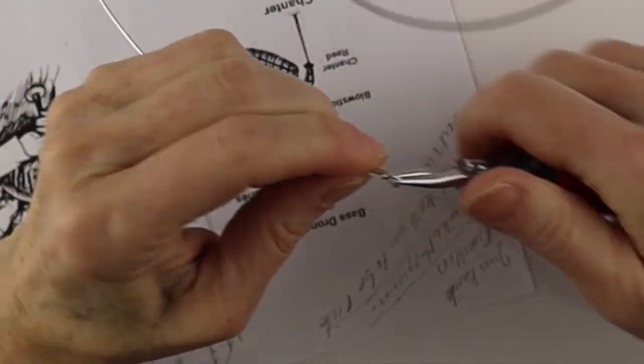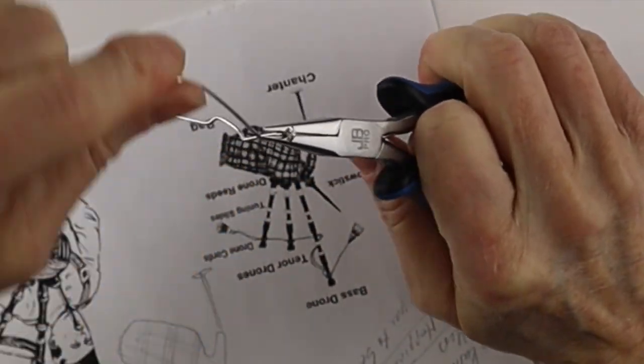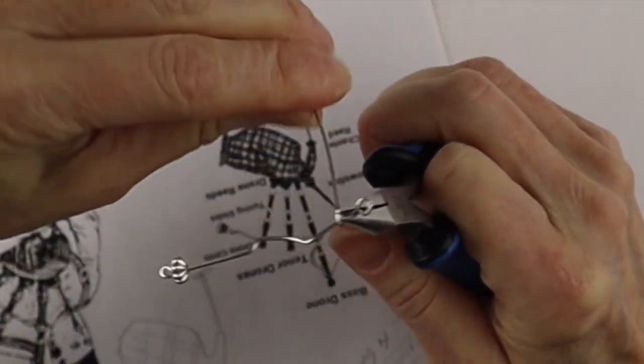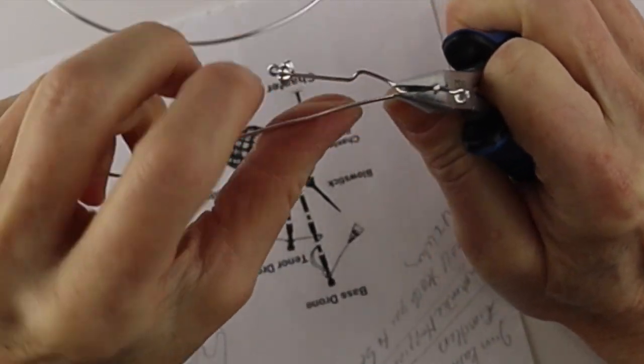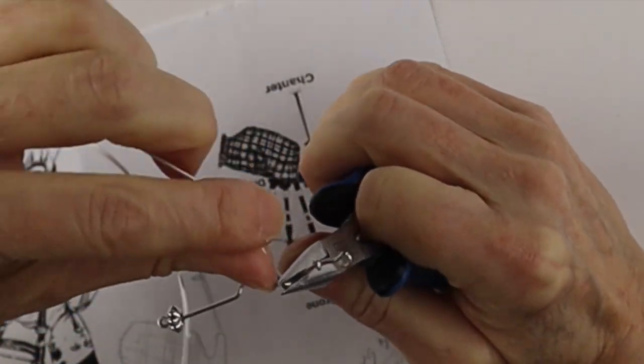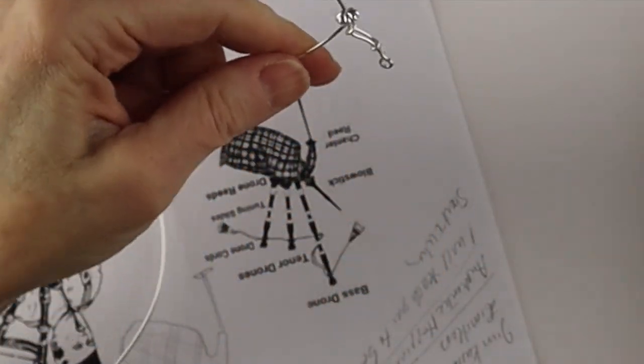To form the little tuning sliders on the drones, we just hold it with the flat pliers and wind the wire around, just to give the impression of those little separations on the drone stick.